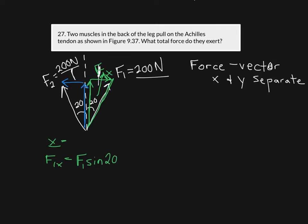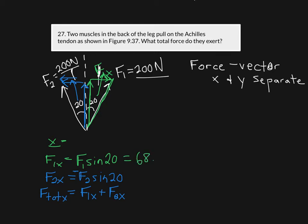For F2x, looking at the triangle, F2x is also on the opposite side, so I get F2 times the sine of 20. However, F2 is acting in the opposite direction — to the left — so F2x has to be negative. The total force in the x direction is F1x plus F2x. Plugging in numbers: F1x equals 200 times sine of 20, giving 68.4 Newtons.